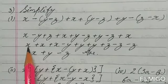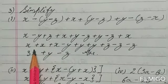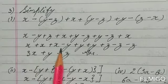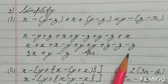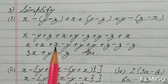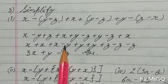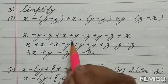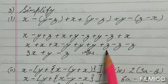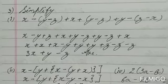Rearrange the like terms together — all the x's, y's, and z's brought together. According to the signs: there are three x's with plus signs, giving 3x. Plus y and minus y cancel each other. Plus z and minus z cancel each other. So the answer is 3x.